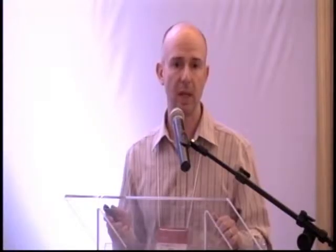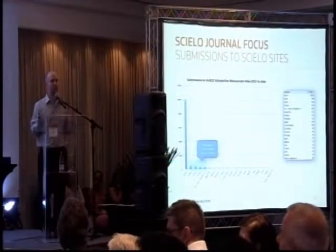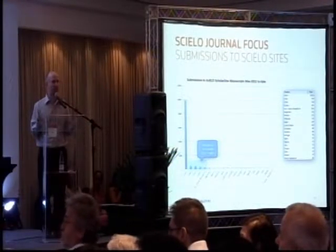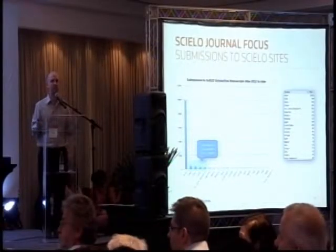It's not just the local region. You are getting submissions from outside the region too — these are Cielo journals which use Scholar One Manuscripts, and we have 56 at the moment using it. As time goes along, more submissions will come from elsewhere in the world. It's not just local growth; it's international growth.